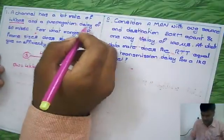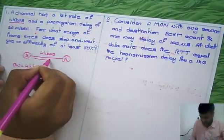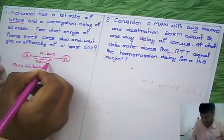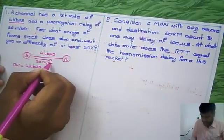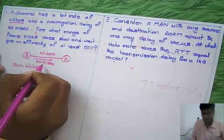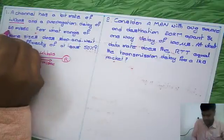Then, given the propagation delay - propagation delay from sender to receiver is 20 milliseconds. This is the speed, 20 milliseconds.